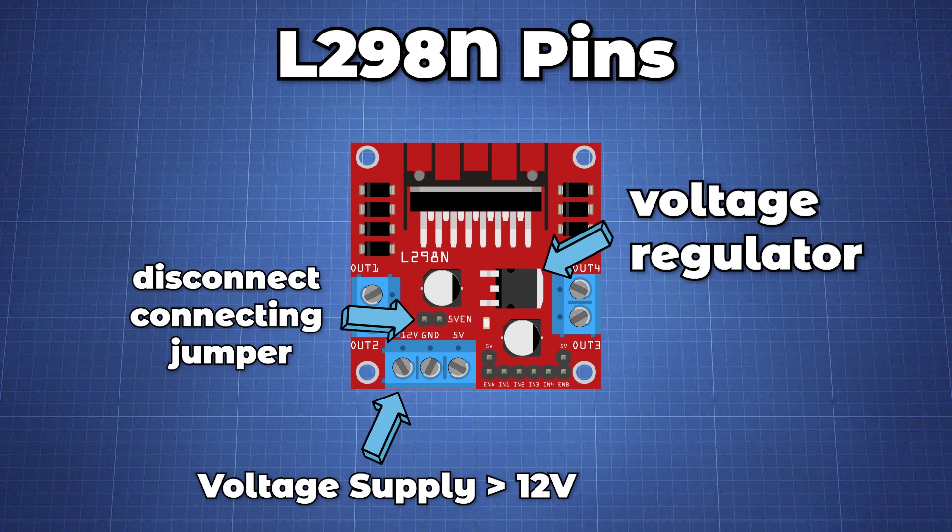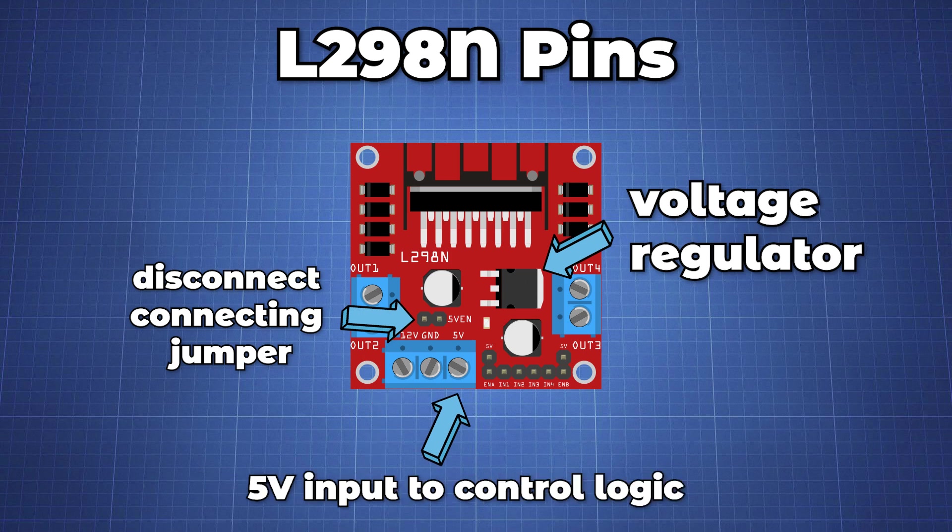But if the voltage supply is greater than 12V we must disconnect the jumper because those voltages will cause damage to the onboard 5V regulator. In this case the 5V pin will be used as an input as we need to connect it to the 5V power supply for the IC to work correctly.